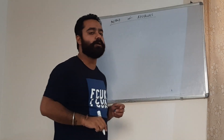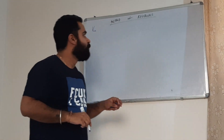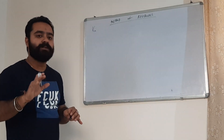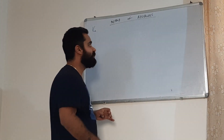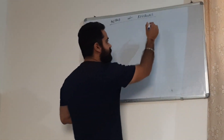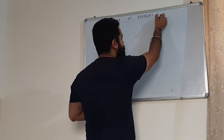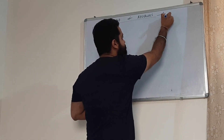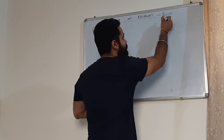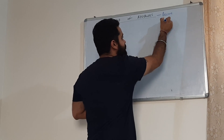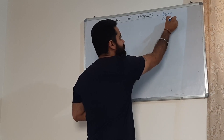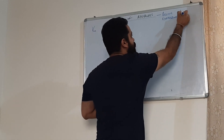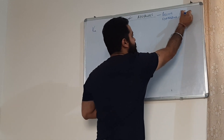Remember there are two methods to determine this. One is the method of residuals and the second is the Wagner-Nelson method, which has already been discussed. The method of residuals is also called as peeling, feathering, and also stripping.